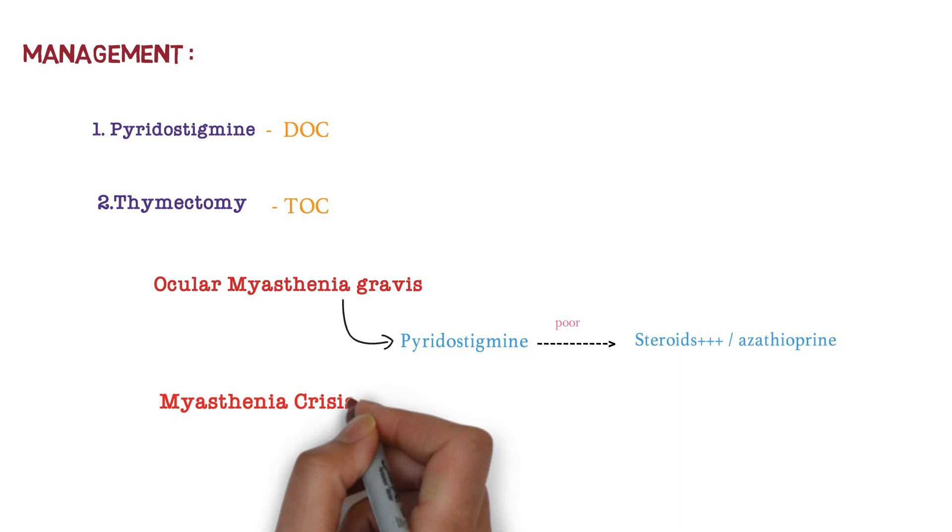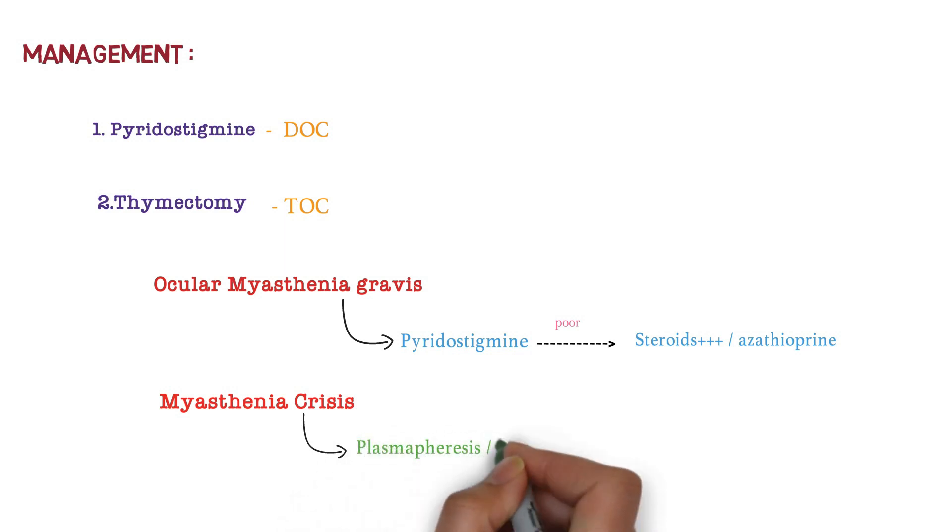If patient is having myasthenia crisis, generally myasthenia gravis is triggered in conditions like infection and pregnancy. In myasthenia crisis, the best option is plasmapheresis or IV immunoglobulin. So this is all about myasthenia gravis.